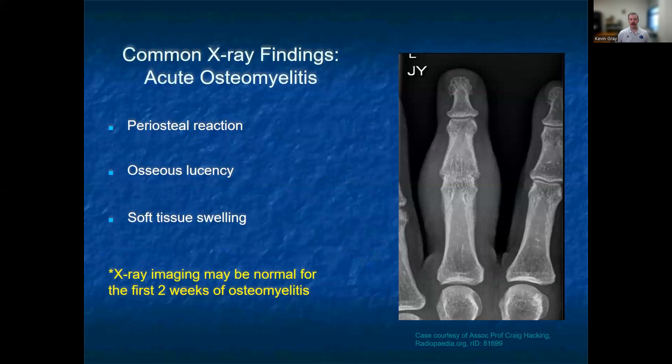In acute osteomyelitis, three common findings include periosteal reaction, osseous lucency, as well as soft tissue swelling. It is important to note that as many as 80% of patients will have normal x-rays within the first two weeks of clinical osteomyelitis.